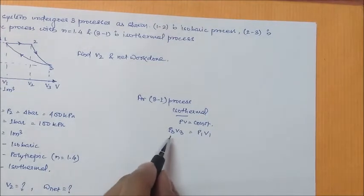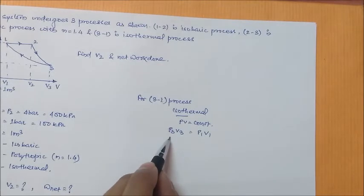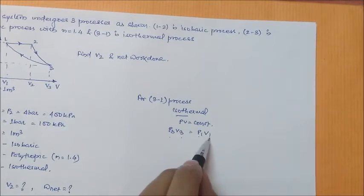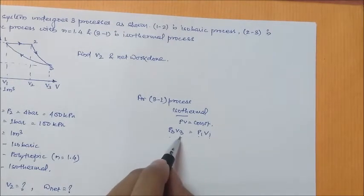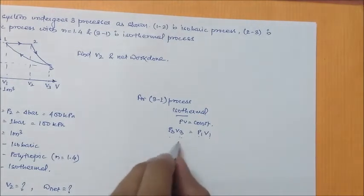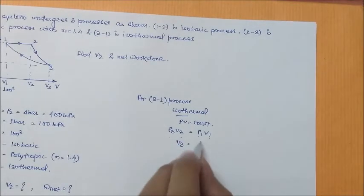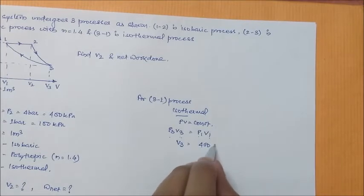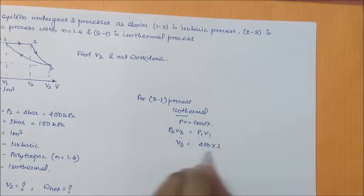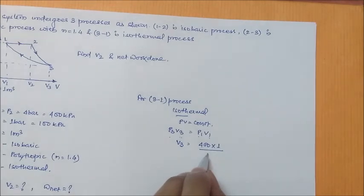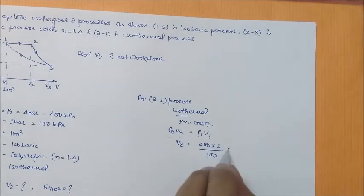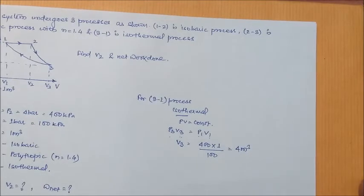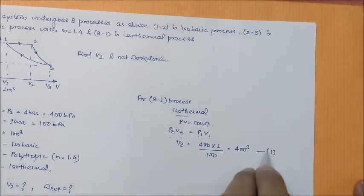Now, see P3 is known, V3 is unknown, P1 is known, V1 is known. So, the only unknown is V3. We will come around 4 meter cube. We got this, give it as 1.